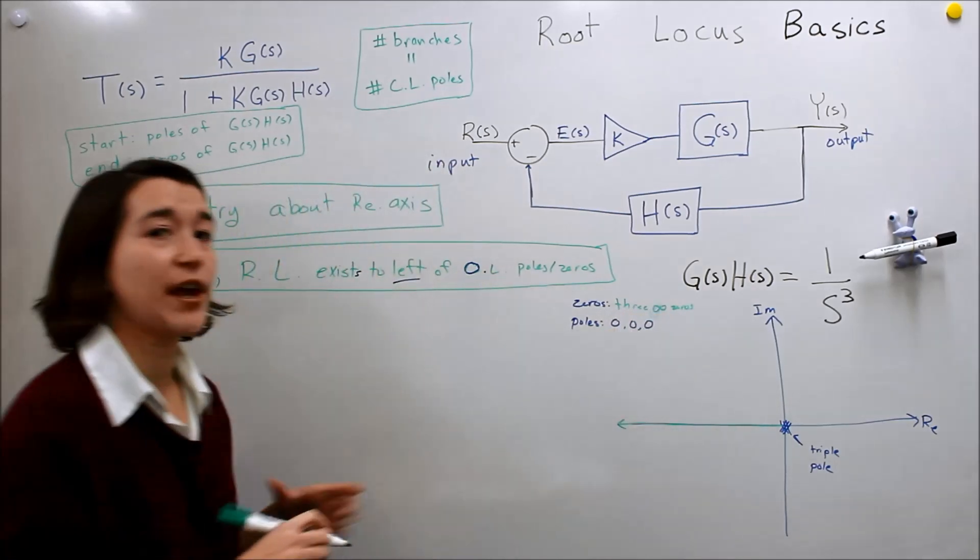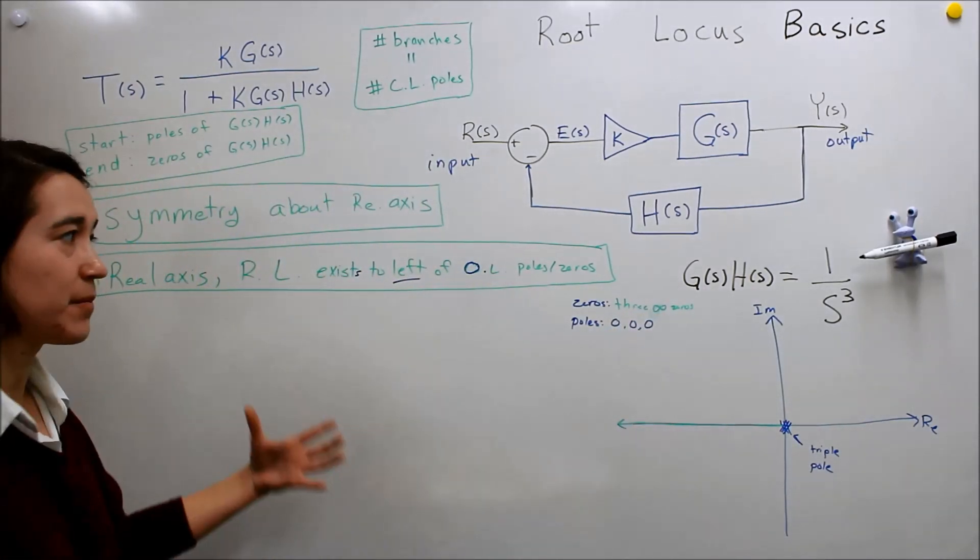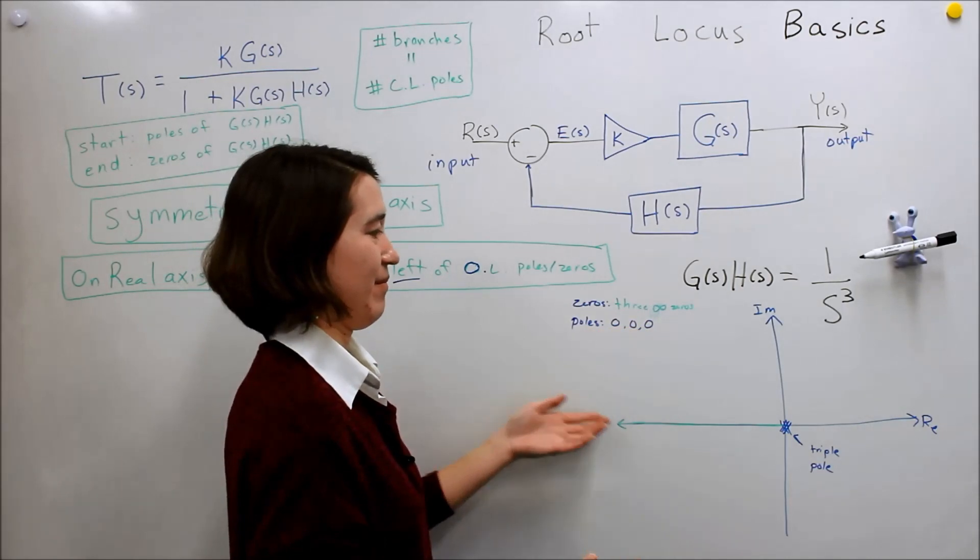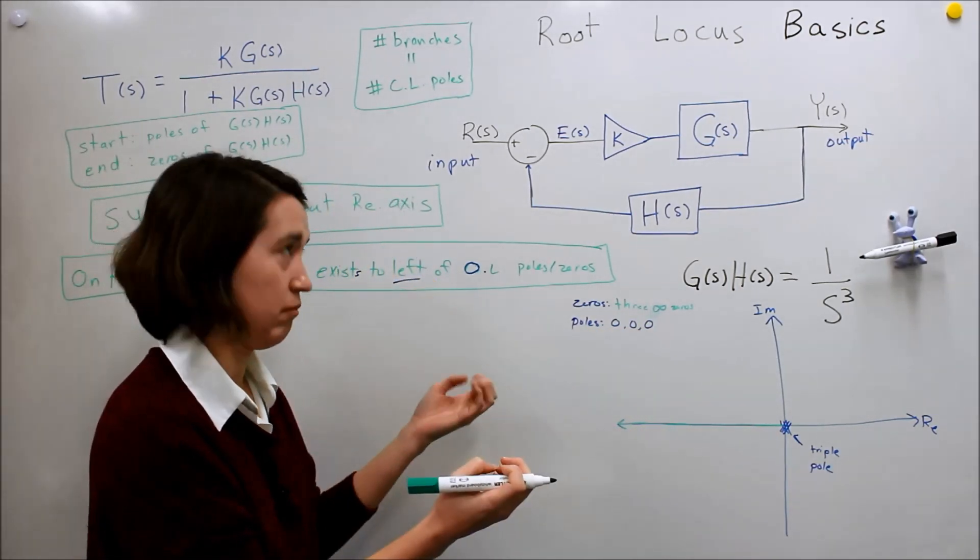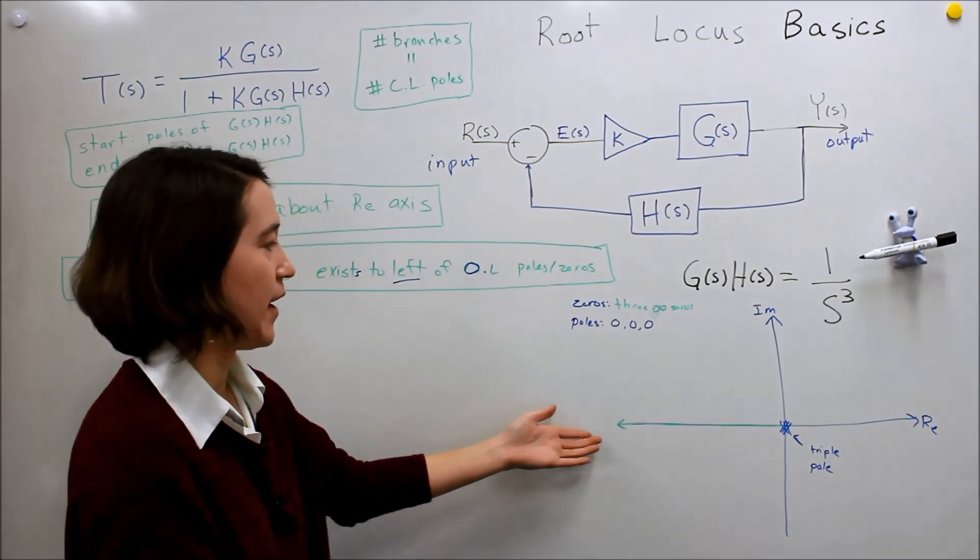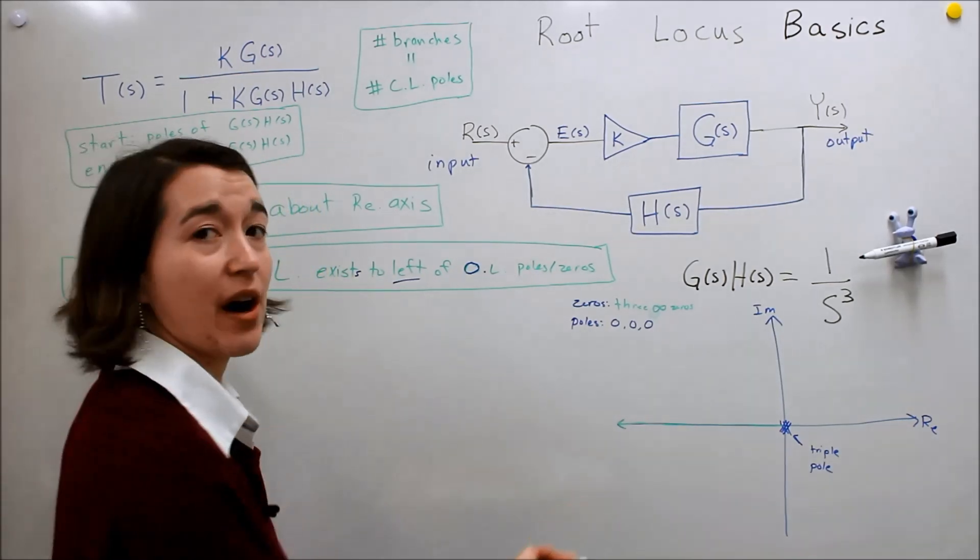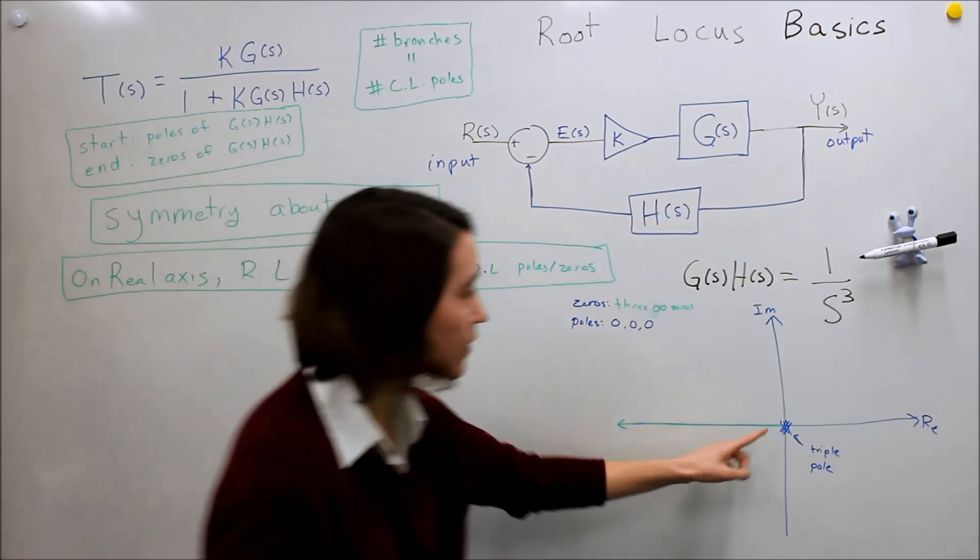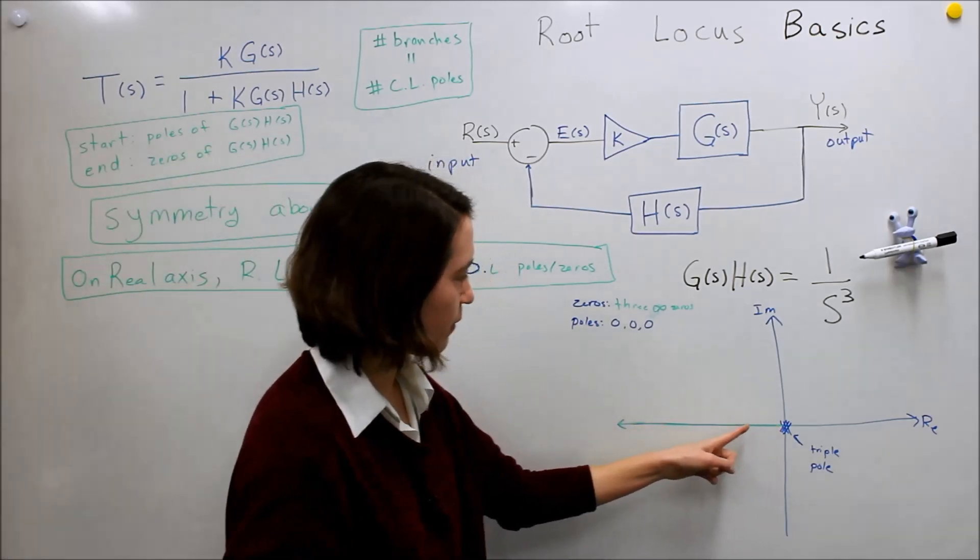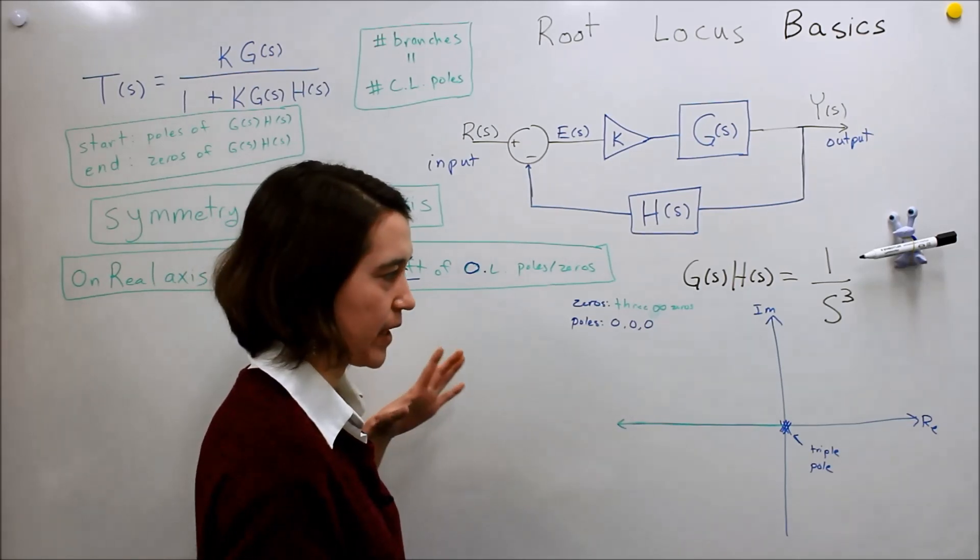So that means that they go off into infinity, and they will just kind of continue off. So there's no discrete, or yeah, finite ending point. The ending point is just continuing off into infinity. So here we actually see that. We see one of them, so one of these three poles will follow this path and go all the way to infinity.